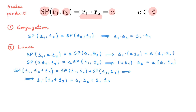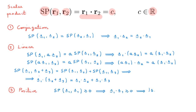The final property of the scalar product is positivity, which tells us that the scalar product of a vector with itself is larger or equal to zero — we can write this in terms of the dot product or the absolute value squared of the vector. Positivity also tells us that the scalar product of a vector with itself equals zero if and only if the vector itself is equal to zero.